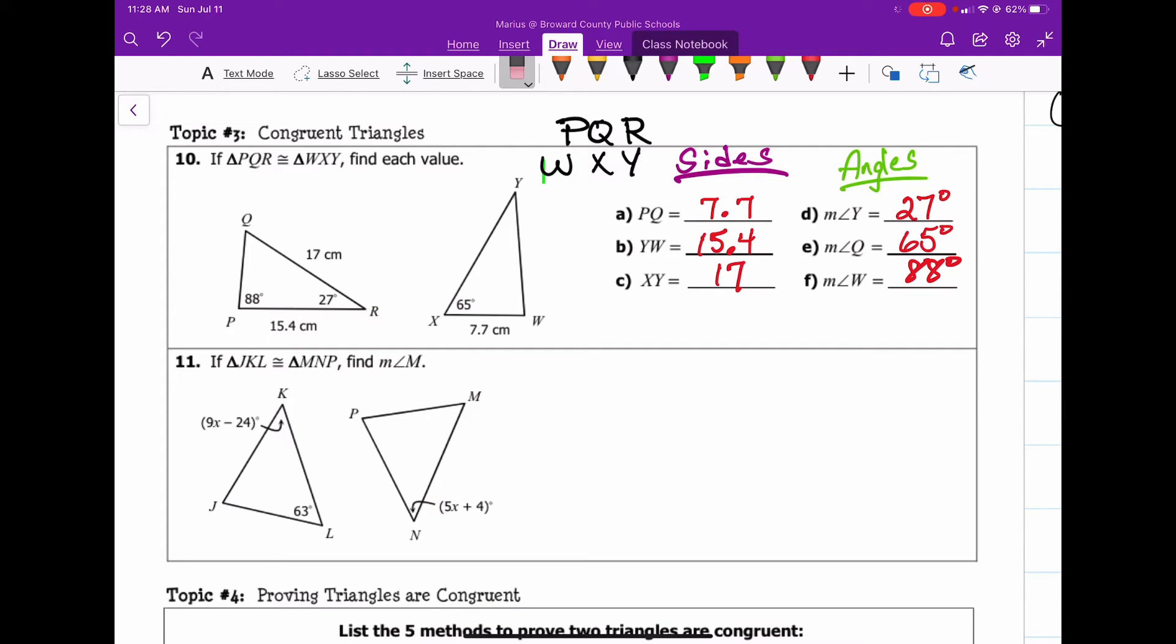So number 11 says if triangle JKL is congruent to triangle MNP, find angle M. Well, let's go ahead and write out our letters again. So we'll do JKL, and MNP. So angle J is the same as angle M. So here's angle M. And here's angle J.